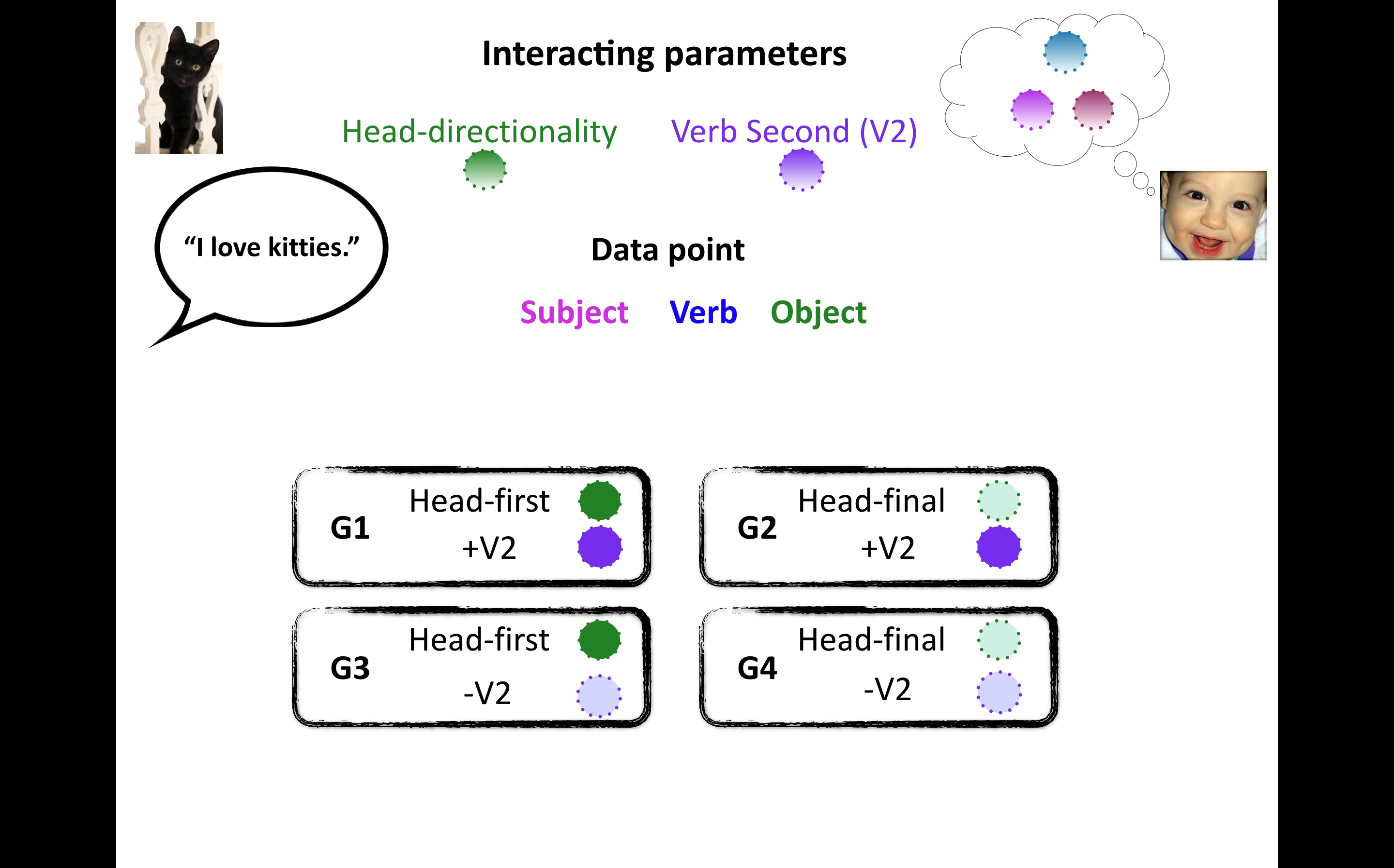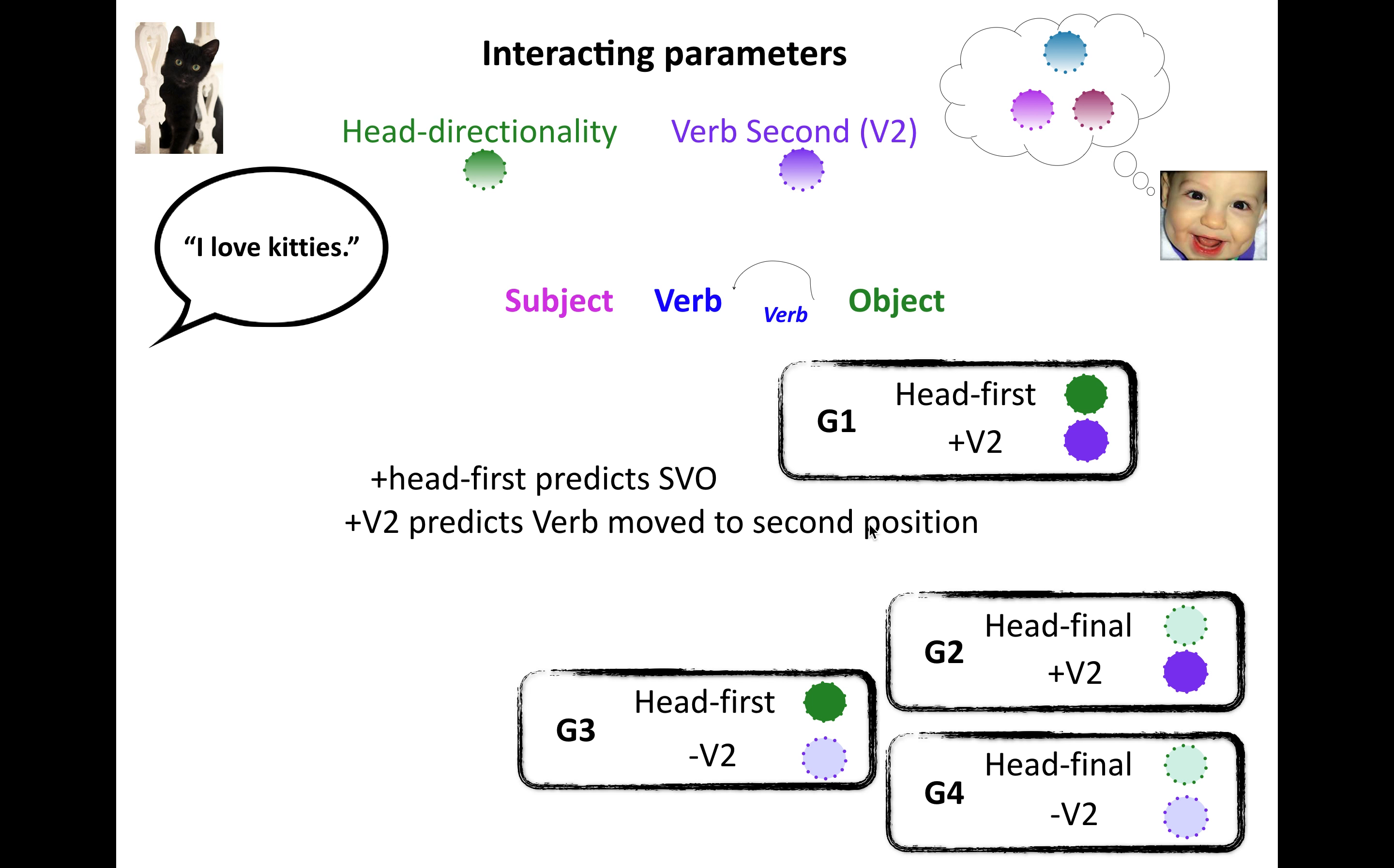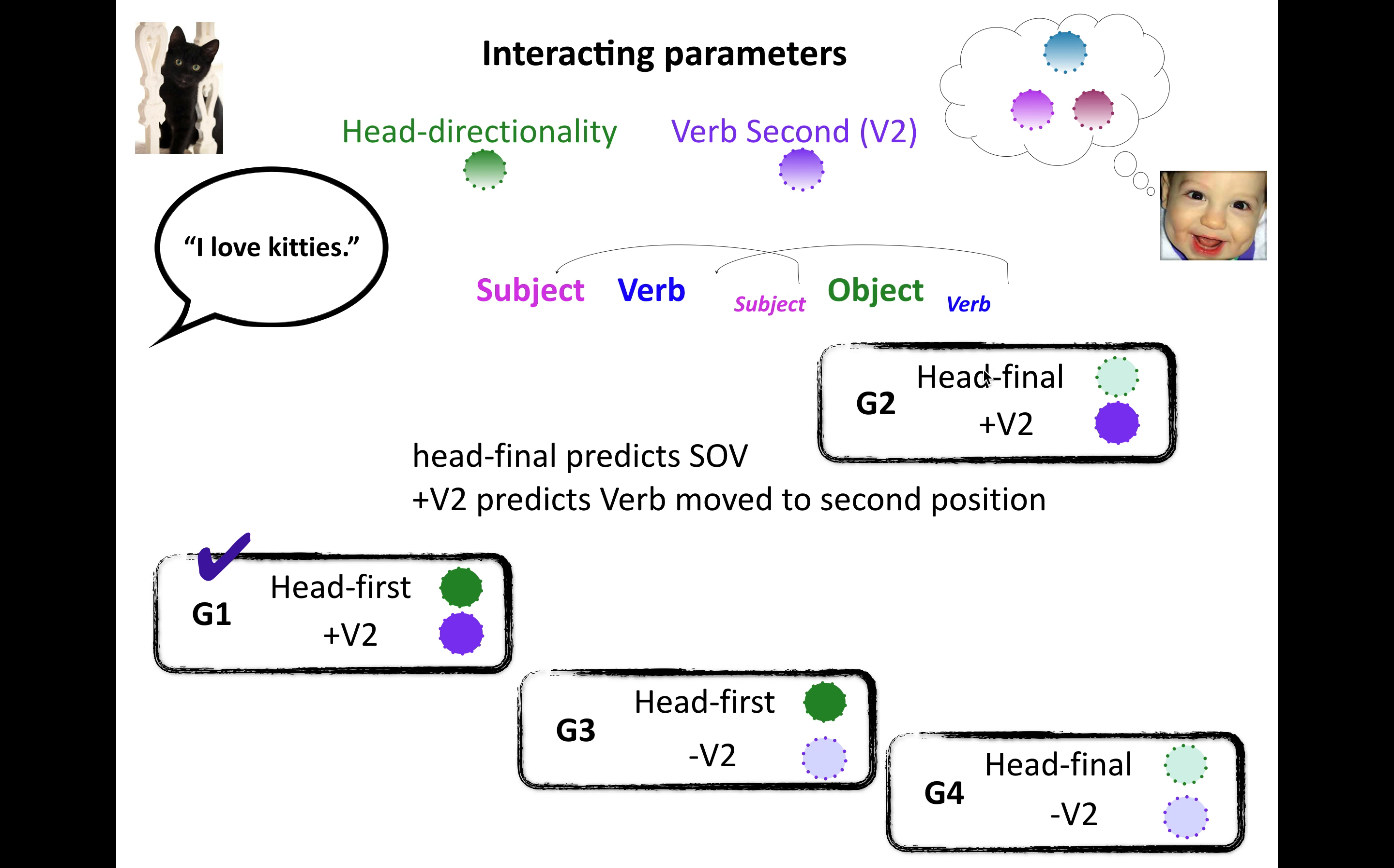So let's consider this data point, a subject, verb, object data point. Which grammars can actually analyze this data point? Well, let's look at them one at a time. So in this case, head first would predict that you have subject, verb, object order. And verb second would predict the verb would move to the second position. So in this case, maybe the subject moved to the first position. So these two values are compatible with this data point. They can account for that data point. So great. That's grammar one.